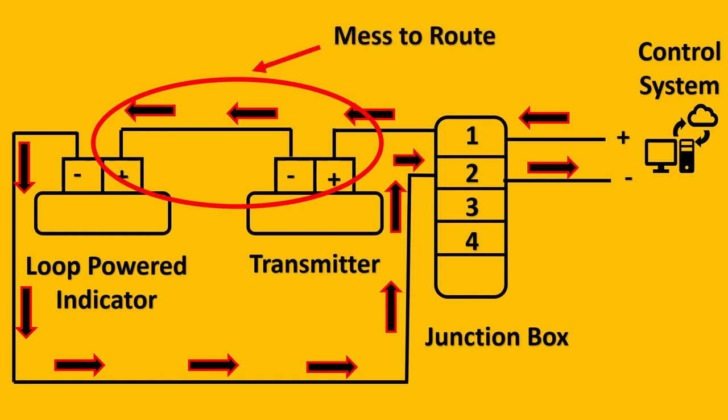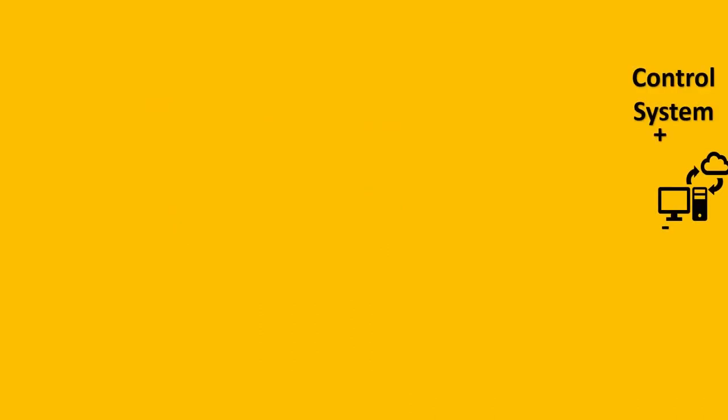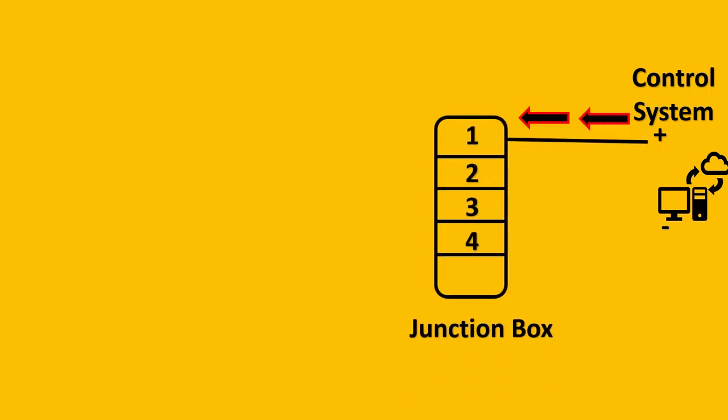So this route is very messy and it is not safe. How are you going to route the wire coming from the transmitter to the loop powered indicator? For this we have another amazing option. The amazing option is that you wire everything via junction box. Let us try to trace this.